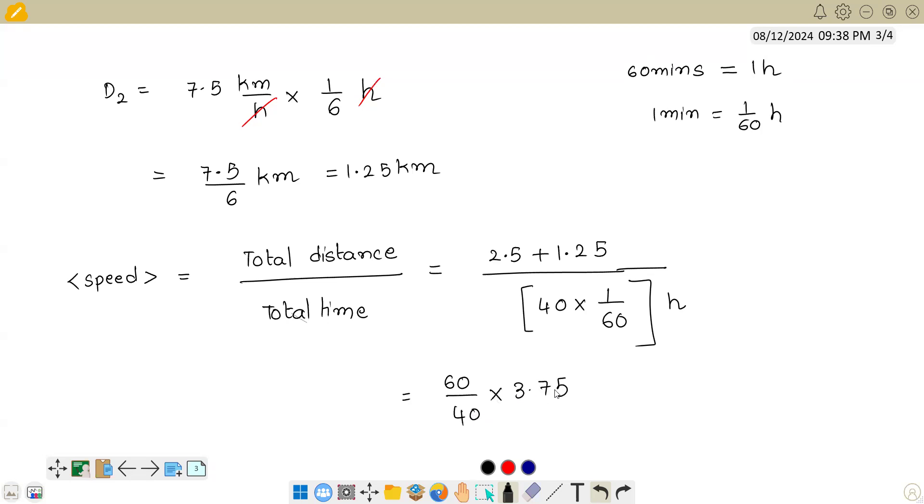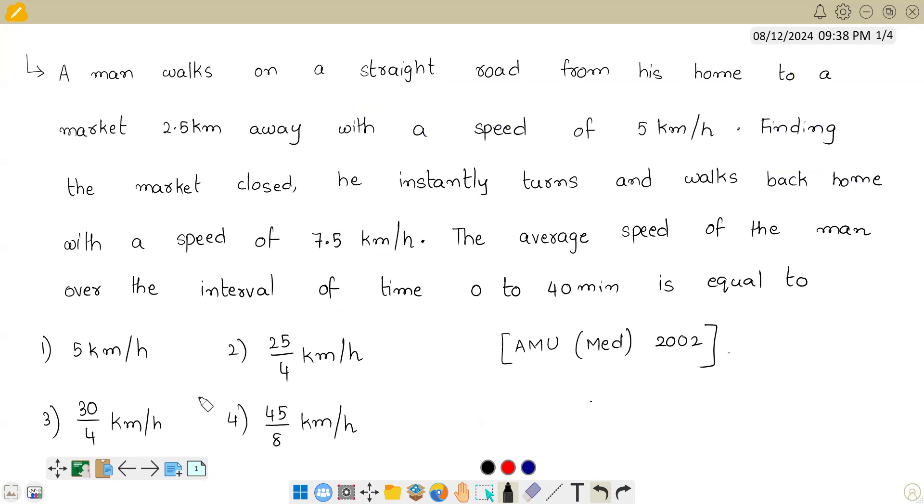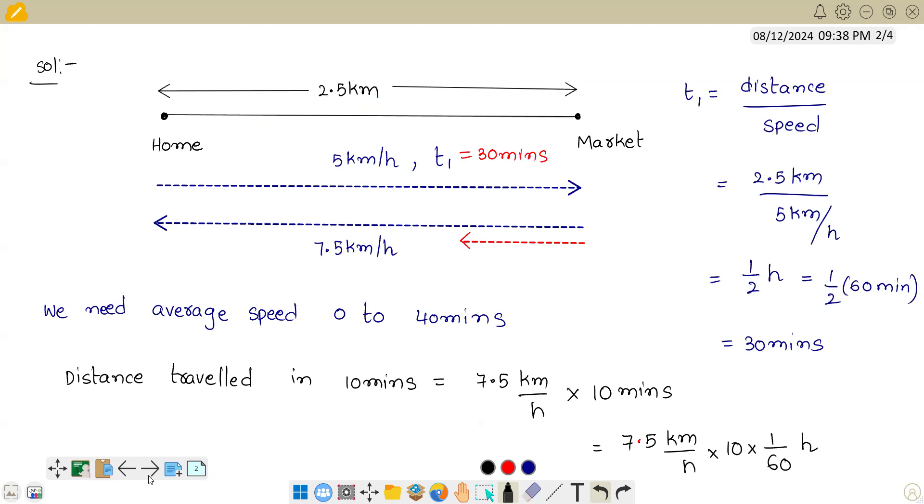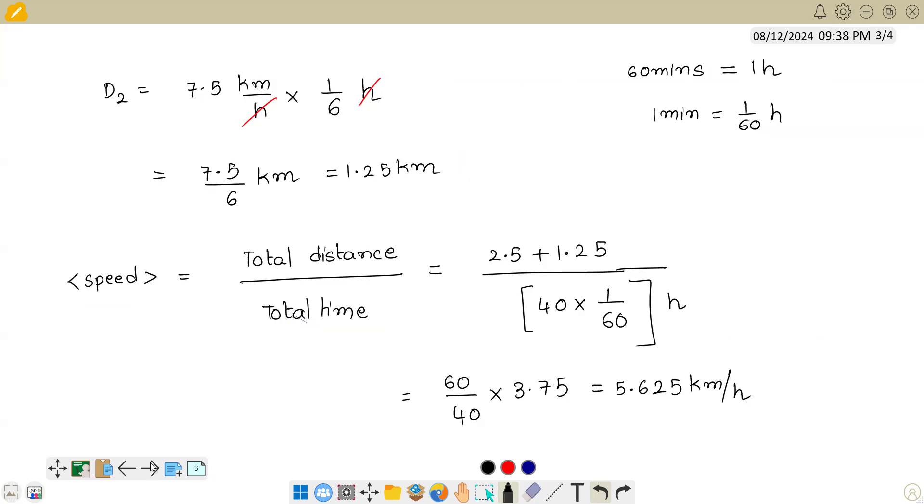So 3.75 into 60 divided by 40, we will get 5.625 km per hour. And we get 45 by 8 approximately, because 45 by 8 is 5.625, which would be option 4.